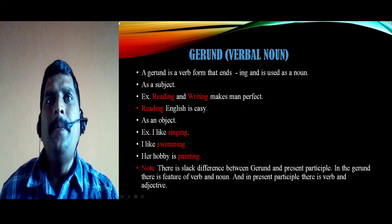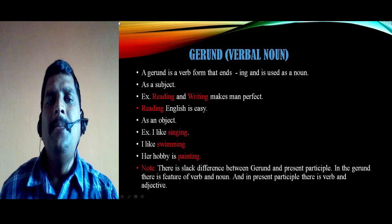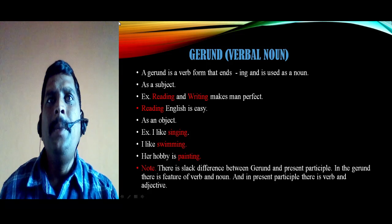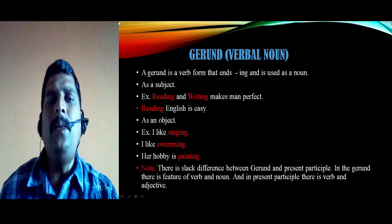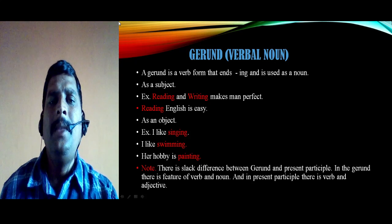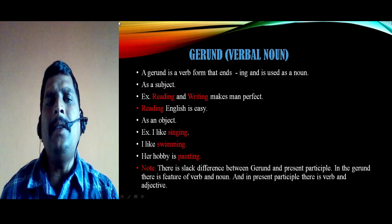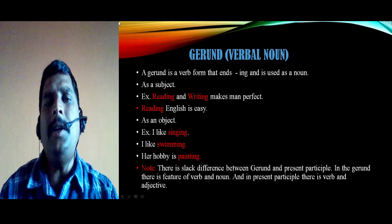A gerund is also used as an object. For example: 'I like singing' — 'singing' (sing + ing) is a gerund acting as an object. Another example: 'I like swimming' — 'swimming' is a gerund acting as an object. And 'Her hobby is painting' — here 'painting' acts as a complement. Note: there is a slight difference between a gerund and a present participle. In a gerund there are features of both verb and noun, whereas in a present participle there are features of verb and adjective.